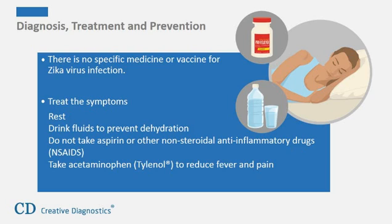There is no vaccine to prevent or medicine to treat Zika virus. Zika virus disease is usually mild and requires no specific treatment. People sick with Zika virus should get plenty of rest and drink fluids to prevent dehydration. Do not take aspirin and other non-steroidal anti-inflammatory drugs (NSAIDs) until dengue can be ruled out, to reduce the risk of bleeding. If you are taking medicine for another medical condition, talk to your doctor or other healthcare provider before taking additional medication.